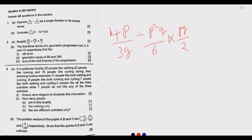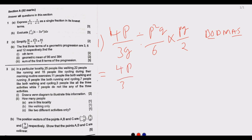This kind of expression comes in different forms but involves simplifying. We need to think about BODMAS — division, multiplication, addition, and subtraction. In this case we have division and multiplication. The first thing we do is transform the division into multiplication, giving us 4p over 3q.